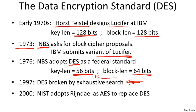DES itself is no longer secure. As a result, the National Institute of Standards issued a request for proposals for a next-generation block cipher standard. In 2000 it standardized on a cipher called Rijndael, which became the Advanced Encryption Standard, AES. We'll talk about AES later on.